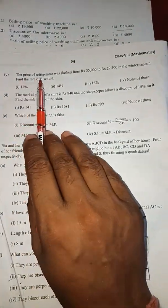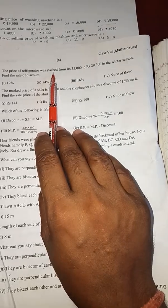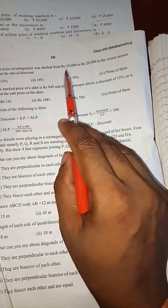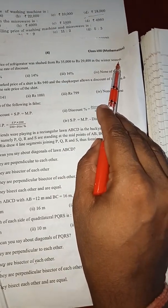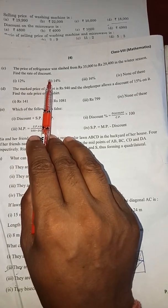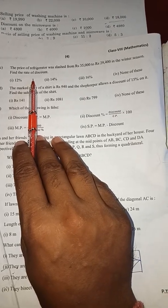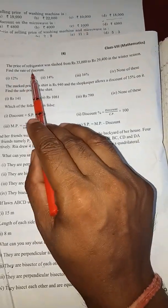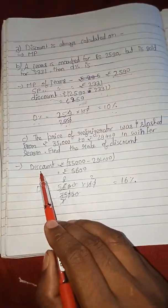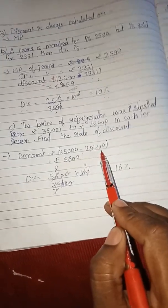Question C: The price of refrigerator was slashed - slashed that means reduced - from 35,000 to 29,400 in the winter season. Find the rate of discount. Again, we have to find the rate. Same formulas we will apply. We will first subtract that price minus this price, and after that find discount percent.